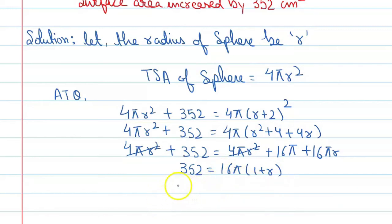When we calculate, the value of π is 22/7. When we shift this, it will be (7/16) × (352/22) which equals 1 + r.